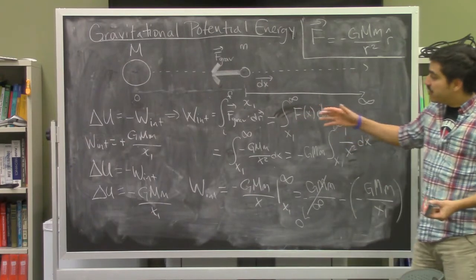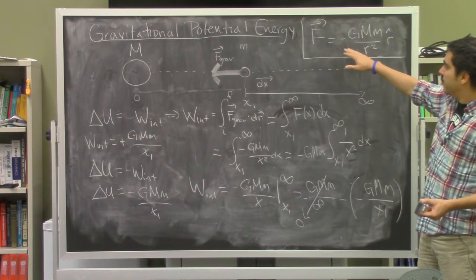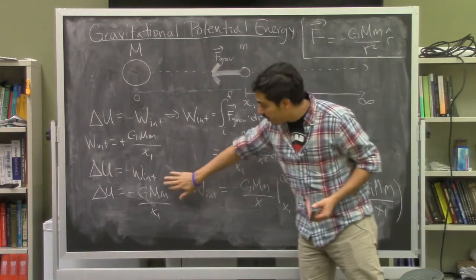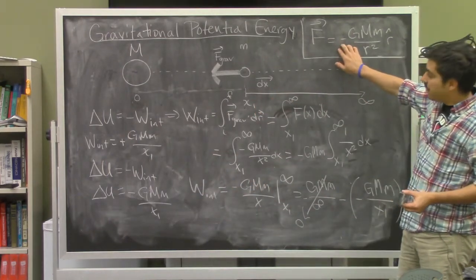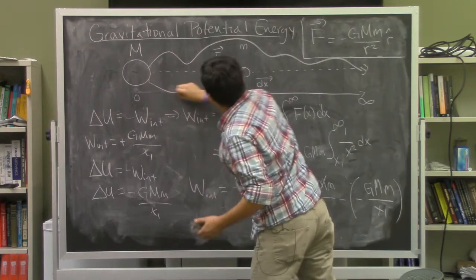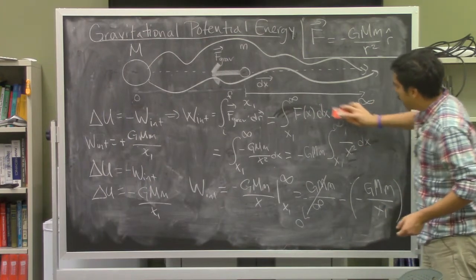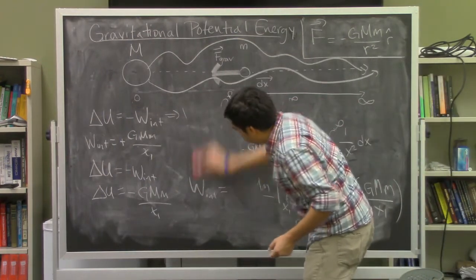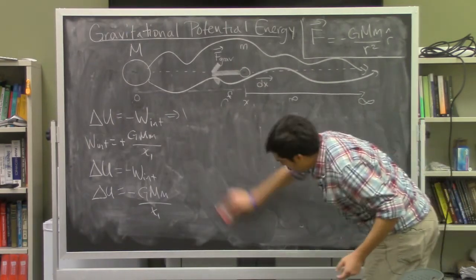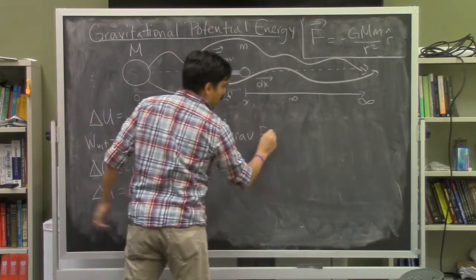We can generalize this by considering the gravitational force in three dimensions. Since we can associate a potential energy with this force, it must be conservative. It doesn't matter what path we take to get to infinity—as long as we reach the same location, we'll have the same work done or the same change in potential energy.